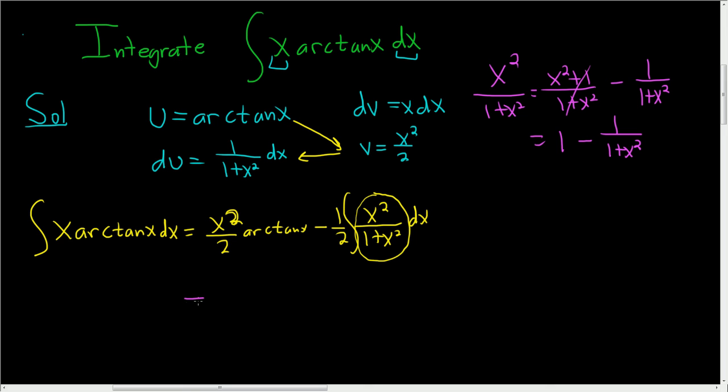And so now we can go back to our problem. So x squared over 2, arctan x, minus 1 half. And let's just go ahead and integrate this stuff.